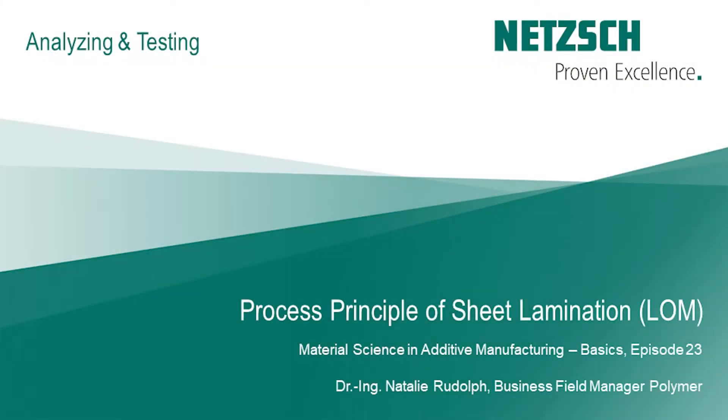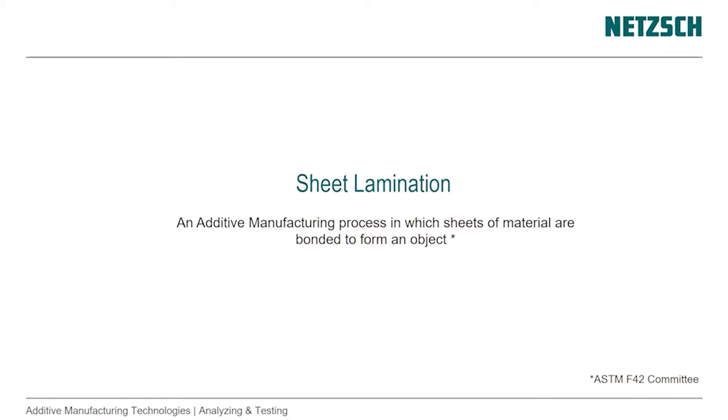The next category is sheet lamination, defined as a process in which sheets of material are bonded to form an object. Typically, as it was invented, the sheets were paper — just regular office paper, 80 grams per square meter — and a high-density water-based adhesive was used to bond it. That's still the most dominant process today.